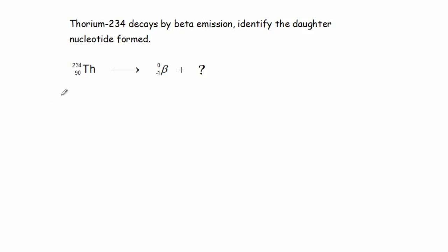The superscript on the left side sums up to 234. Therefore, on the right side, the superscripts combined must sum up to 234. In this case, we have 0, and we need to have a number with this particular radioactive particle.